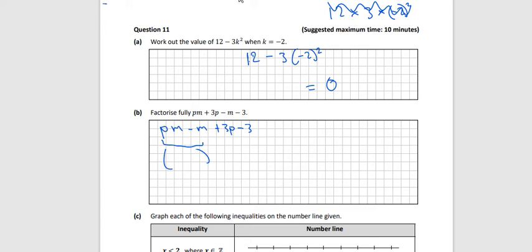We're taking the first two and factorizing them, taking out what's common. There's an M there that's common. And then what times M gives you PM? It'll just be P. And what times M gives you M? It's just 1. So P minus 1.